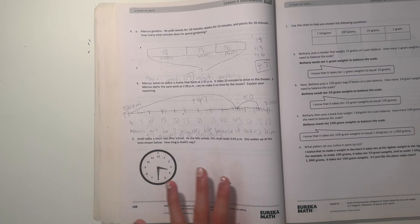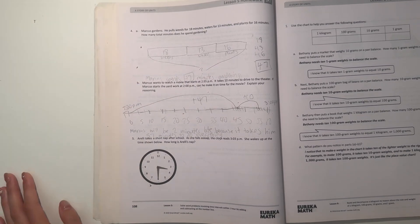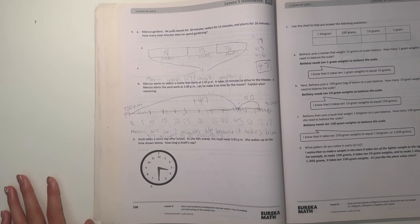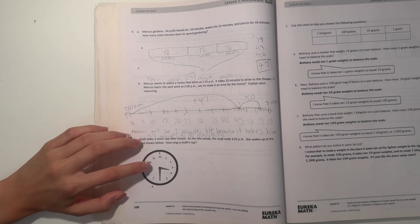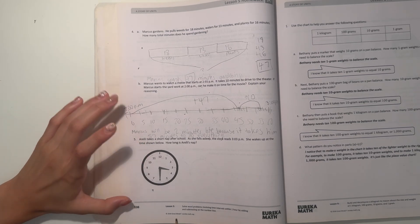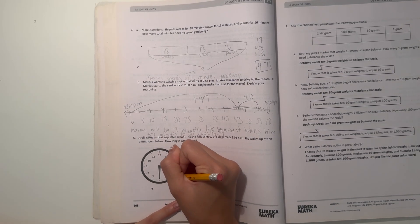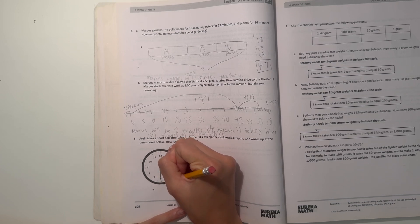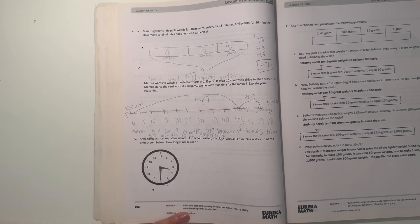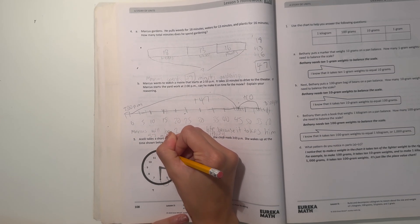And last but not least, number five, Aurelie takes a short nap after school. As she falls asleep, the clock reads 3:03 p.m. She wakes up at the time shown over here. How long is her nap? So let's see. Right now, the clock is showing 3:30 p.m. So we can just go back. So each tick is five minutes different, so we can just go like five. Well, let's first know. 3:03 would be right over here. So we have to get here.